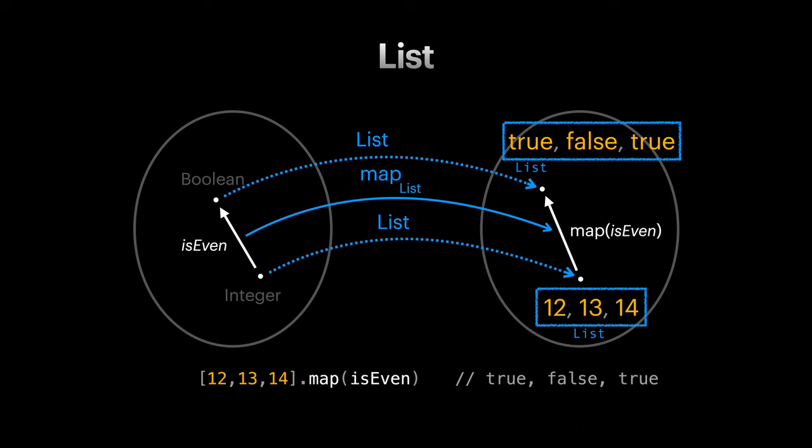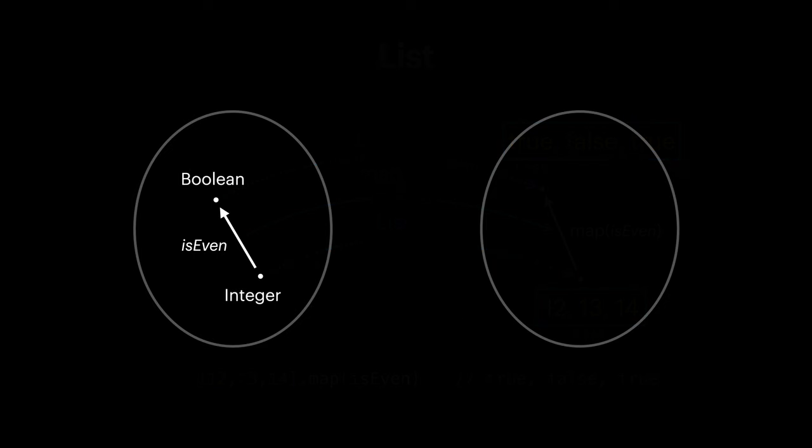As you see, both option and list are acting like containers for a single type. But what if our type constructor receives more than one type parameter, like either? Unlike option and list, either is a type constructor that receives two type parameters, which each can be different.